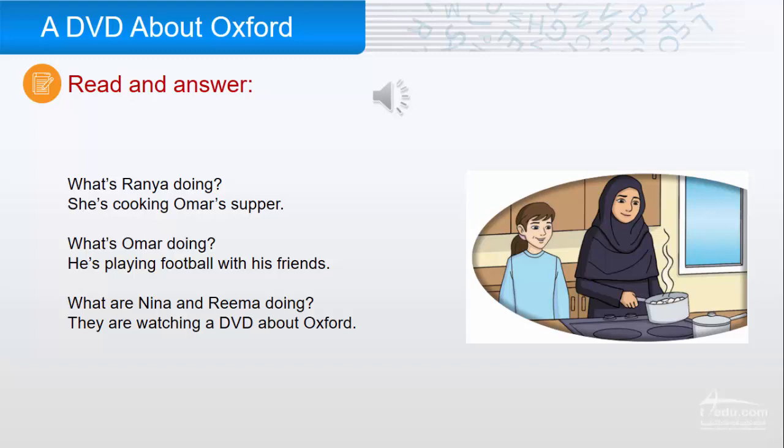So, Rania is cooking Omar's supper. And Omar is playing football with his friends. Nina and Reema are watching a DVD about Oxford.